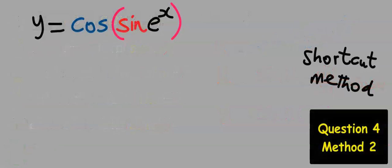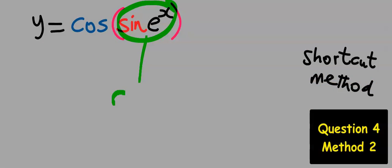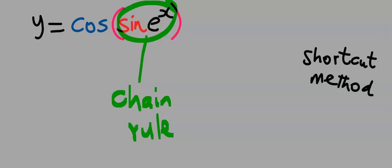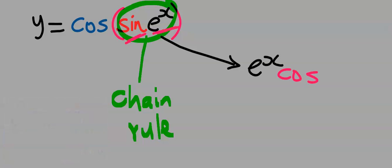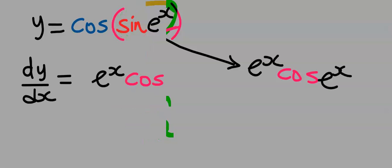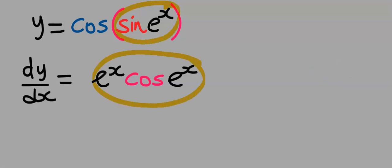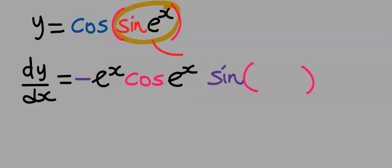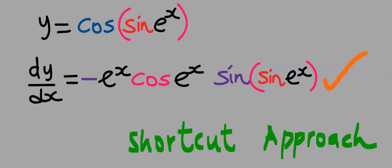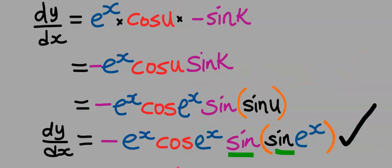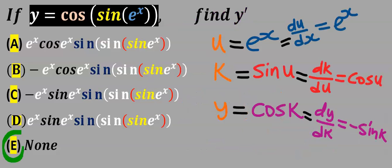Let's consider the shortcut method. We are going to treat this as a separate chain rule, but here it is of one inner function. Differentiating this we're going to have exponential x. Differentiating sin we're going to have cos, then recopy back exponential x. We differentiated this and we now have this. Next, differentiate cos and you're going to get minus sin. Next, recopy back everything in front of cos, which is sin(eˣ). This is our dy/dx using the shortcut approach, and the answer is same as we obtained earlier — confirmed that our answer is E.